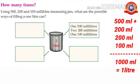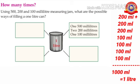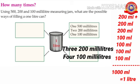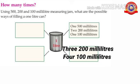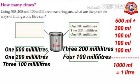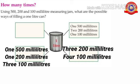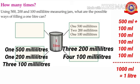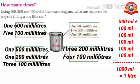Can you find out the other possibilities? Yes, when 3 times 200 ml and 400 ml are added together, we get 1000 ml, which is equal to 1 liter. Also, 1 time 500 ml, 1 time 200 ml, and 300 ml added together make 1000 ml, equal to 1 liter. And 1 time 500 ml and 500 ml make 1 liter.